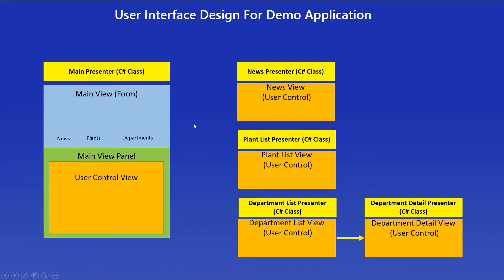The application has been designed with a main form that has an area in the lower half containing a panel. This panel is used to allow the various views to be displayed. The types of views displayed here are user controls. There are basically four user controls used in this application: the News Presenter which contains a PDF file, a Plants List User Control showing plants for this fictitious company, a Department List User Control displaying a list of departments, and from there you can add, delete, or update department entries.